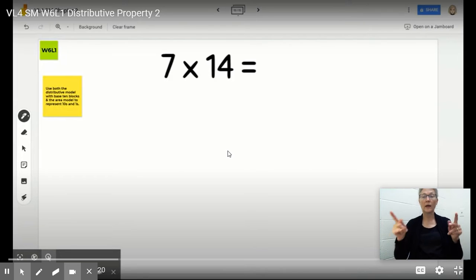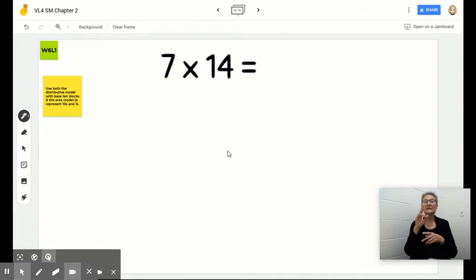All right, here's our chance to go ahead and do it again. We've got 7 times 14, so now we're going to think about using that distributive model. We want to break apart that 14, but we can also incorporate the area model as well to represent those tens and ones.